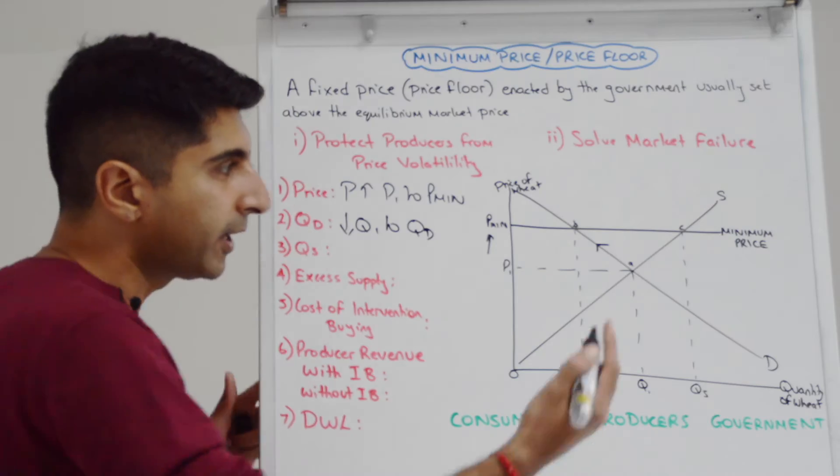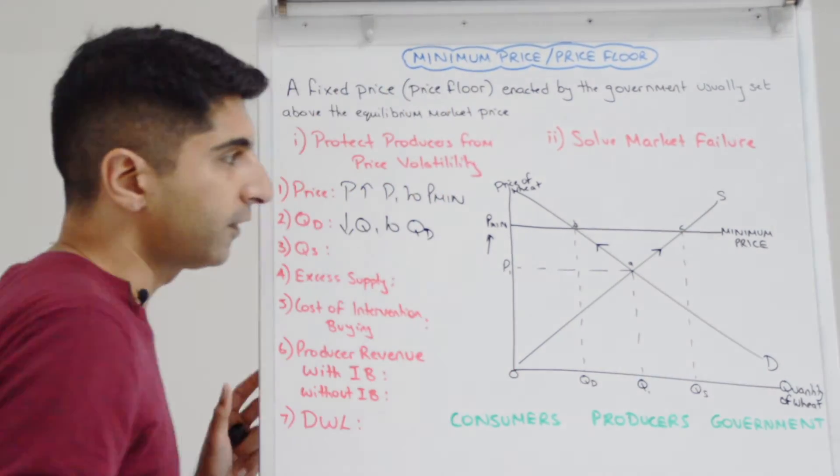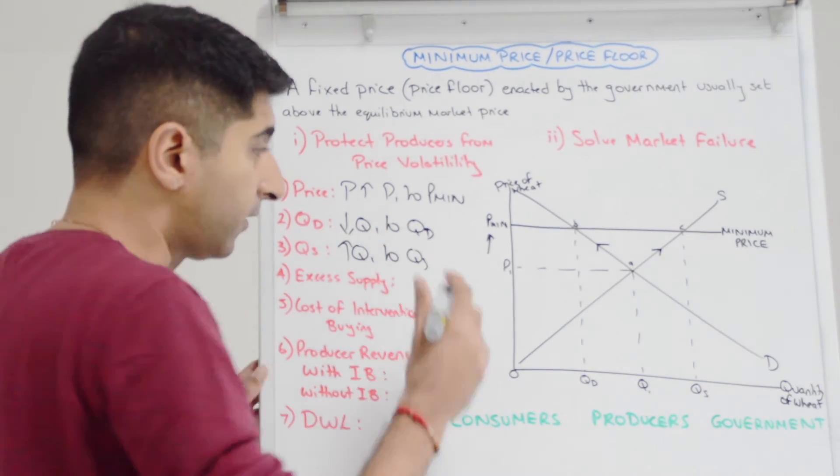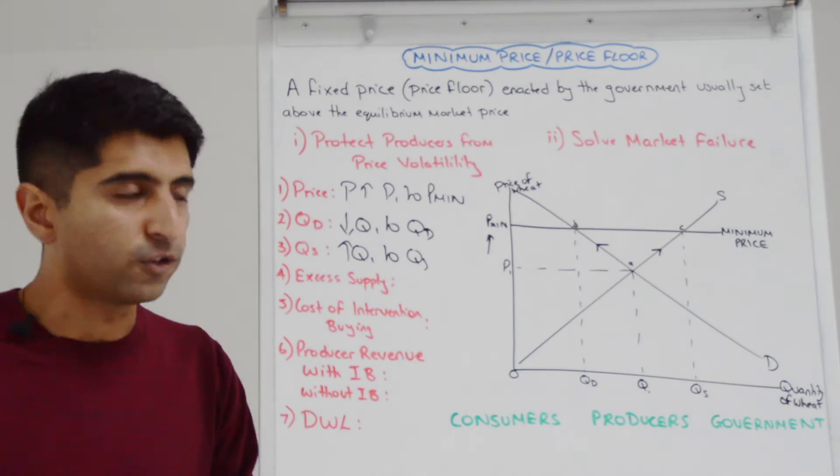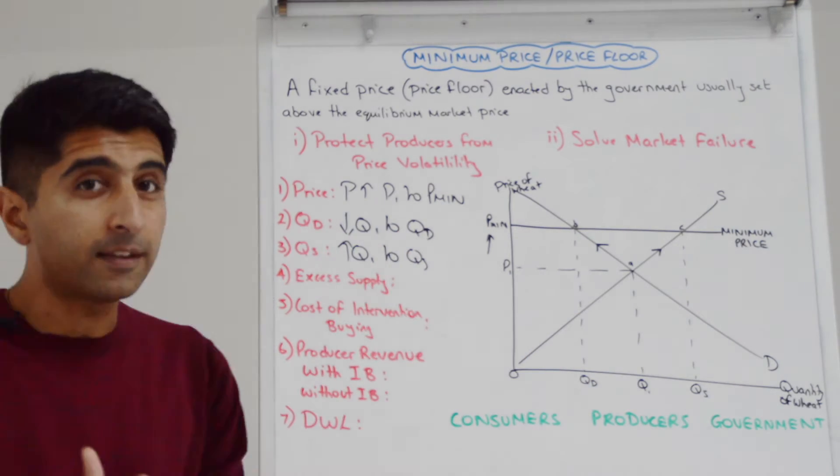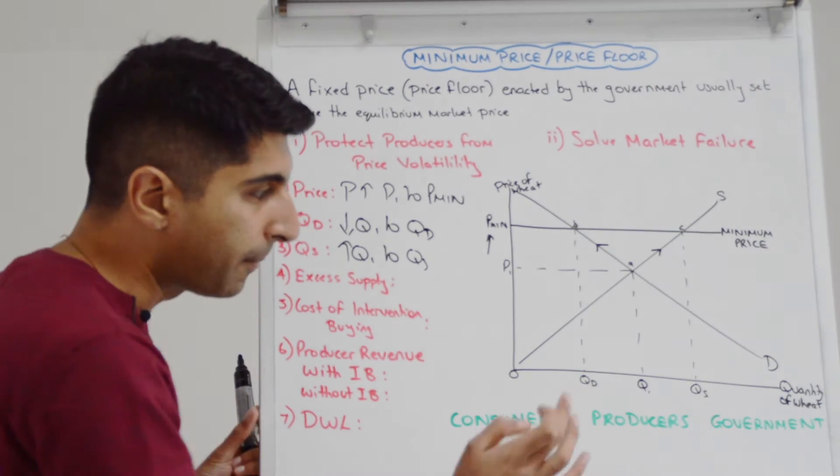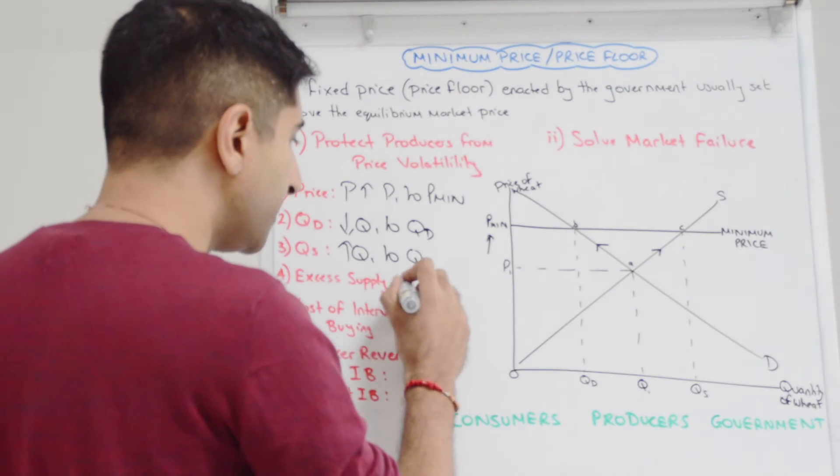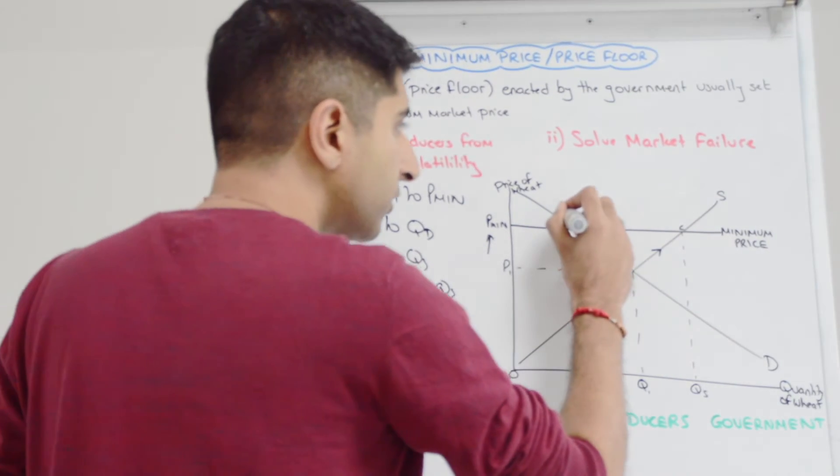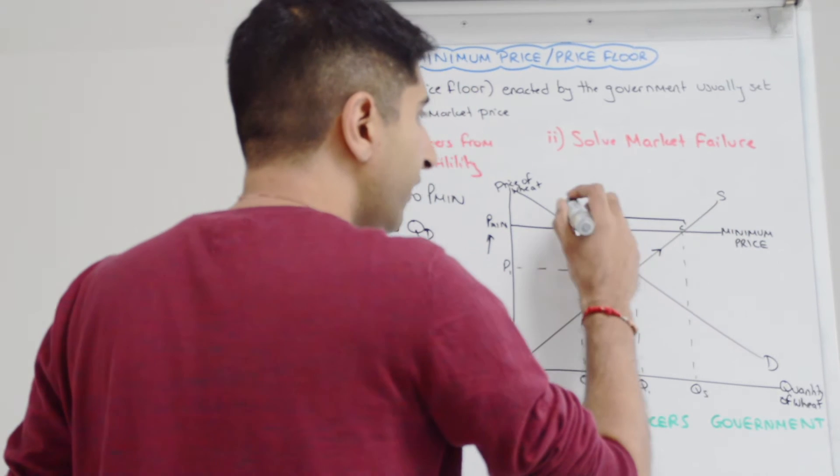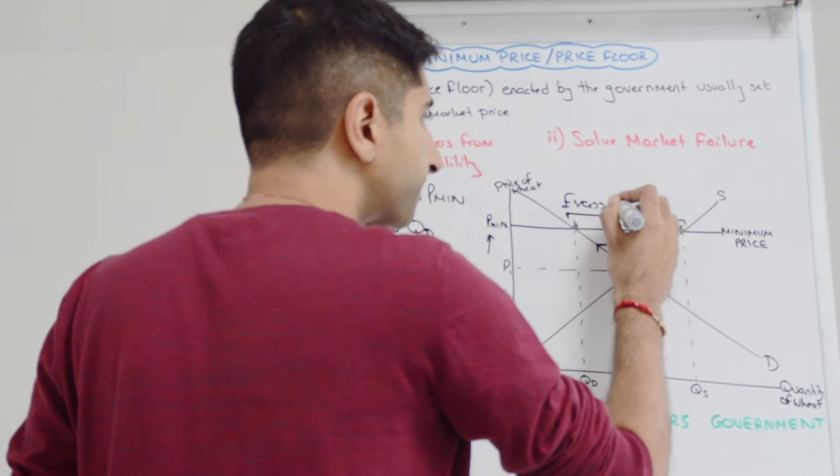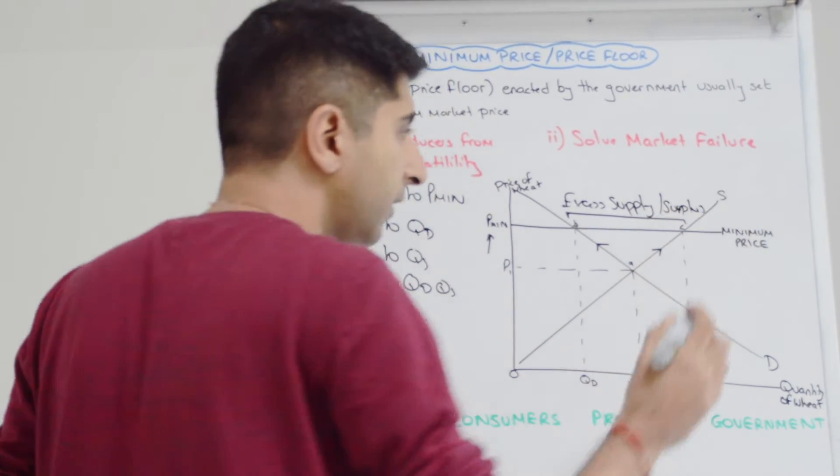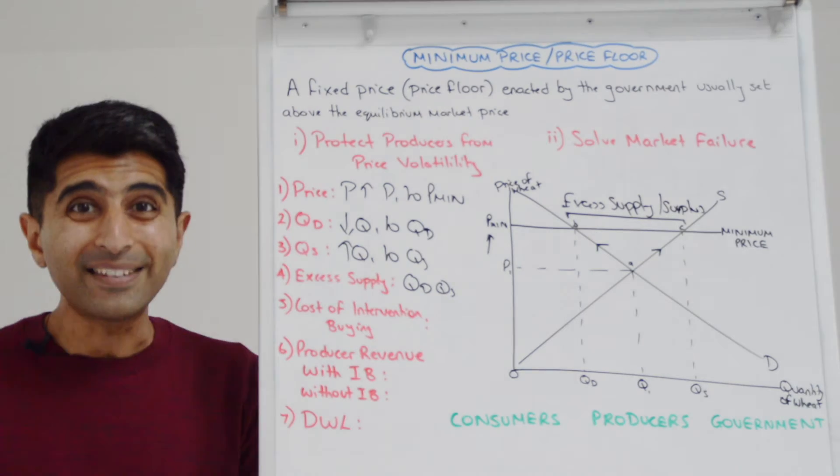What about supply? Well, we can see there has been an expansion or an extension of supply from Q1 to QS. Suppliers are responding to the incentive of higher prices by producing more output. But that creates a big issue in the market. Supply is now much greater than demand. An excess supply is created of that quantity difference between QD and QS. We can label it as such on the diagram. That quantity difference there is the excess supply, also known as a surplus.